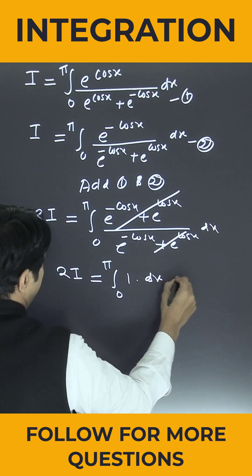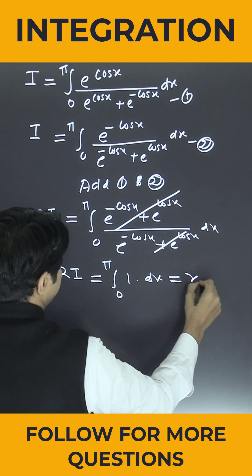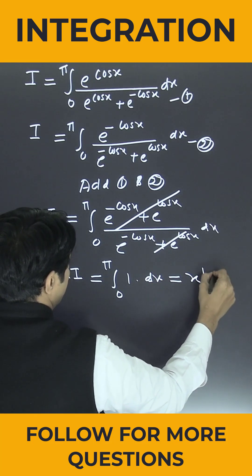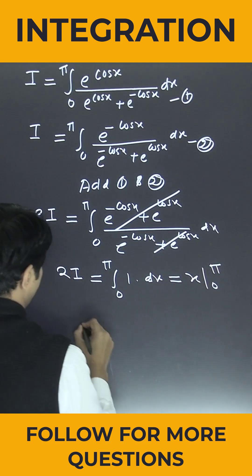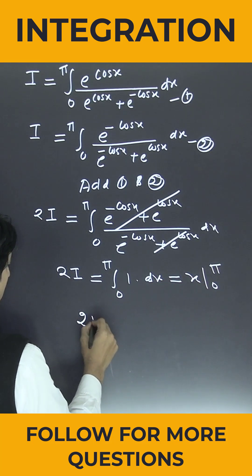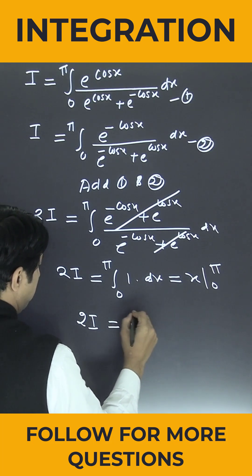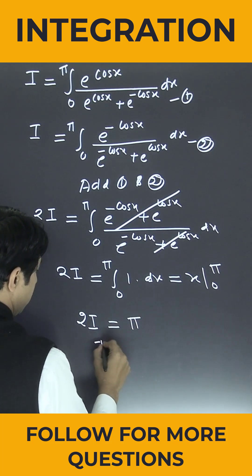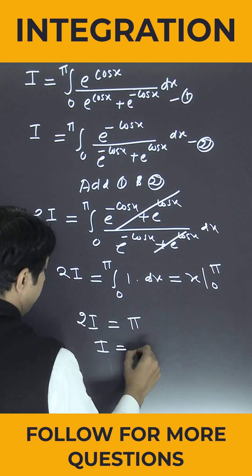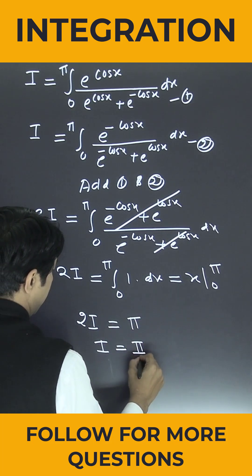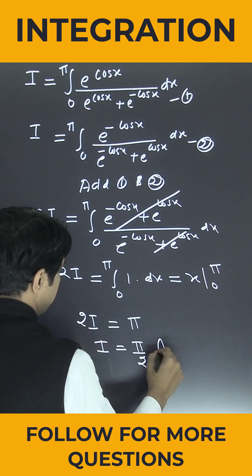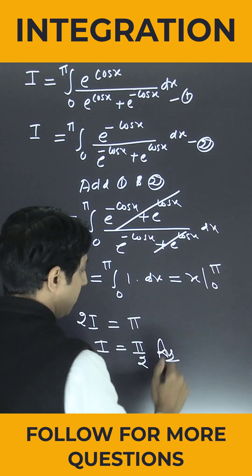So 2I is nothing but integration from 0 to π of 1 dx, which is x from 0 to π. So 2I is nothing but π. Therefore the value of I is π/2. This is the answer. Thank you.